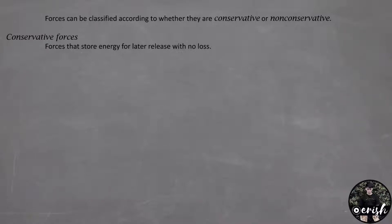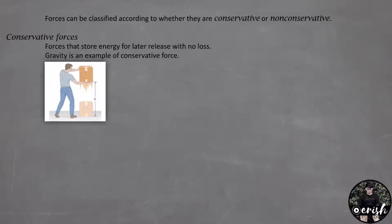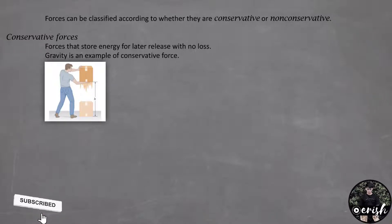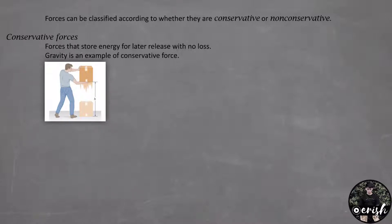One example of a conservative force is gravity. In this figure, imagine lifting a box of mass M from the floor to a height H. To lift the box with constant speed, the force we need to exert against gravity is mass times gravity — opposite to the weight of the box. Since we have an upward distance, the work we provide to the box is equal to the weight times the height, or mass times gravity times the height. That is the work.